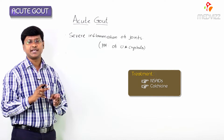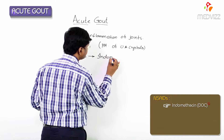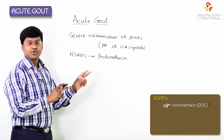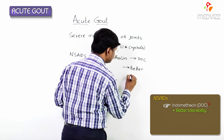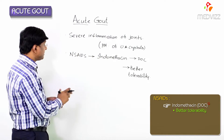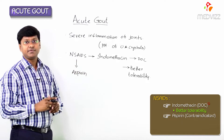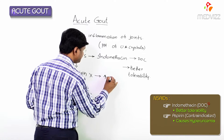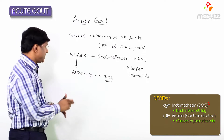In acute gout, we give NSAIDs, colchicine, and corticosteroids. NSAIDs like indomethacin are the drug of choice because of better tolerability. NSAIDs like aspirin should not be given in these patients because aspirin will cause hyperuricemia.